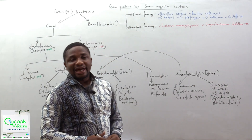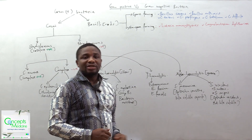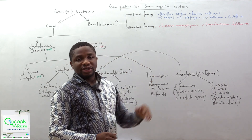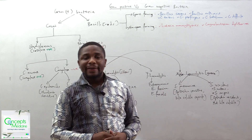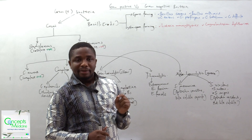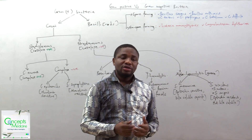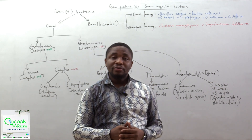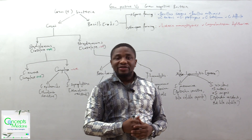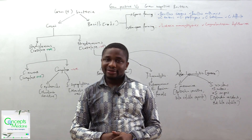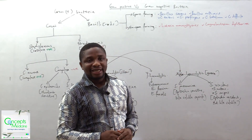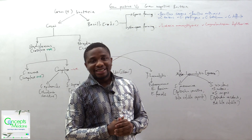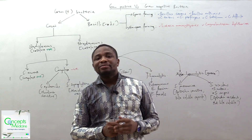Finally, we can talk about the bacilli. The bacilli have two types: the spore-forming bacilli and the non-spore-forming bacilli. For the spore-forming bacilli, we have examples like Bacillus cereus, Bacillus anthracis, Clostridium difficile, Clostridium perfringens, and Clostridium tetani. For the non-spore-forming bacilli, we can think of Listeria monocytogenes and Corynebacterium diphtheriae.